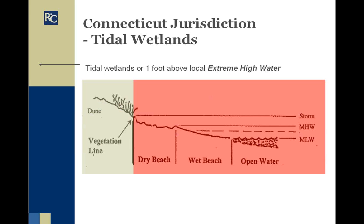For Connecticut tidal wetlands jurisdiction, the tidal wetlands jurisdiction can extend inland as far as the wetlands go or the possibility of growing wetland species exists. One good thing about Connecticut: there is a very clear demarcation between tidal and inland wetlands. The state regulates tidal wetland activities, not local commissions. Inland wetlands in Connecticut are regulated by local inland wetlands commissions.